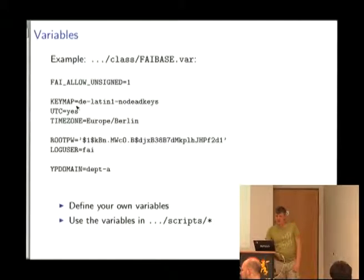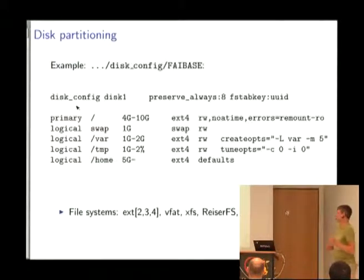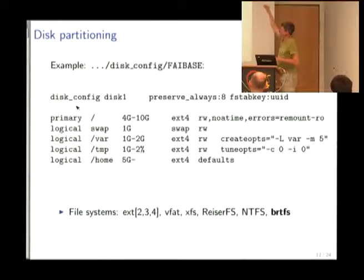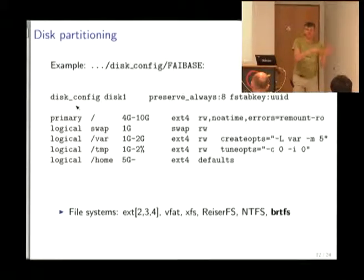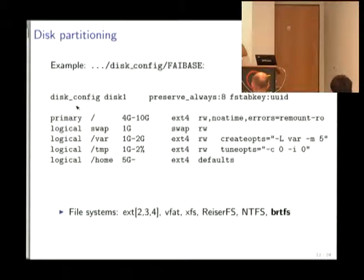Variables are just shell variables — nothing special. The disk partitioning part is very nice. If anyone has ever written a preseed file for disk partitioning, everyone says it's really horrible. What we invented was something like an fstab file. You specify: use the first disk you find, create some primary and logical partitions. The sizes are not fixed — they may be from one to two gigabytes. The script doing the partitioning looks at how big the disk is and then optimizes all the sizes. We can also give fine options when creating file systems or when mounting.